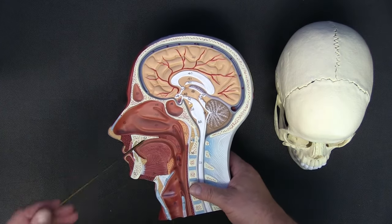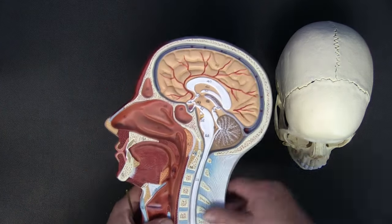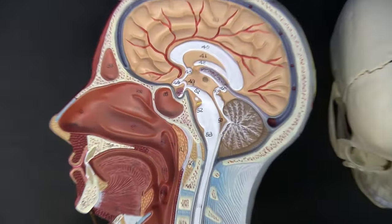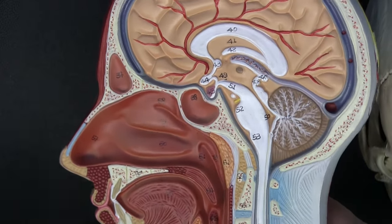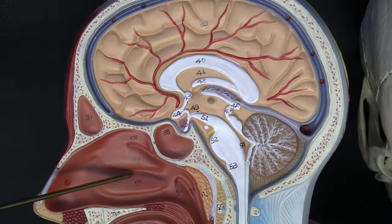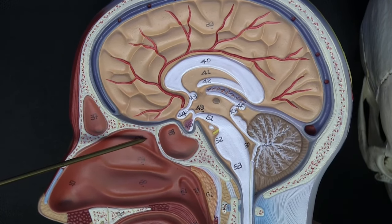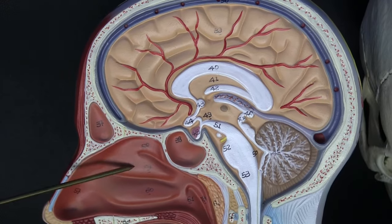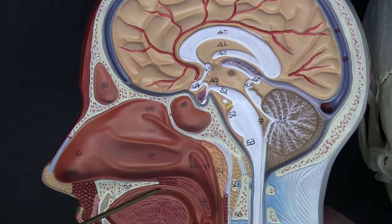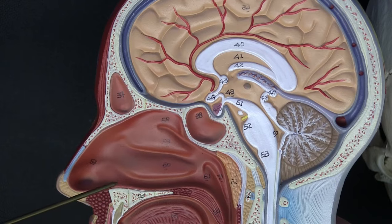In the nasal cavity we have multiple structures called conchae or turbinates, and we'll zoom in to see those. There is an inferior turbinate or concha, a middle concha, and a superior concha. These are going to make turbulence in the air that we breathe in, help to warm it up and humidify it.